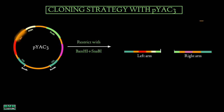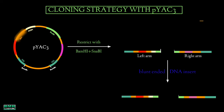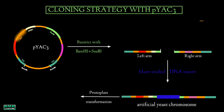We are then left with two arms, each bounded by one telomeric sequence and one SnaBI site. Since SnaBI is a blunt-end cutter, a blunt-ended DNA insert is ligated between the two arms, producing the artificial chromosome. Finally, a protoplast transformation technique is used to introduce the artificial chromosome into Saccharomyces cerevisiae.